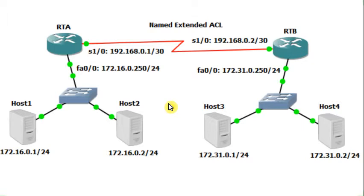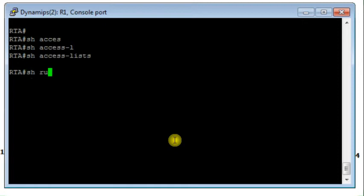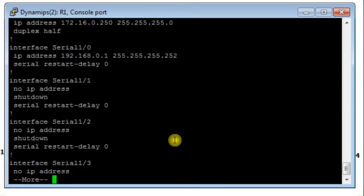First we need to locate which router the access list should be configured on. An extended access control list should always be configured close to the source, so router RTA is the ideal place. We go to RTA first and check if there is any existing access list configured — there is none, as confirmed by the configuration file.